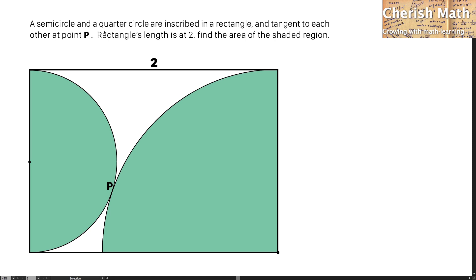A semicircle and a quarter circle are inscribed in a rectangle and tangent to each other at point P. The rectangle's length is 2. Find the area of the shaded region.